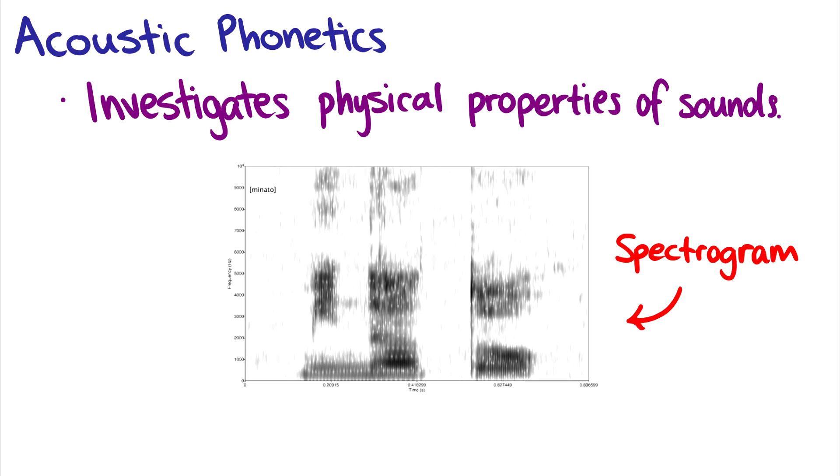The first thing I want to talk about are the different types of phonetics. One type is acoustic phonetics. Acoustic phonetics investigates the physical properties of sound. So what I have here below is a picture of what is called a spectrogram, and this is a speaker, I'm presuming Japanese, saying the word minato.